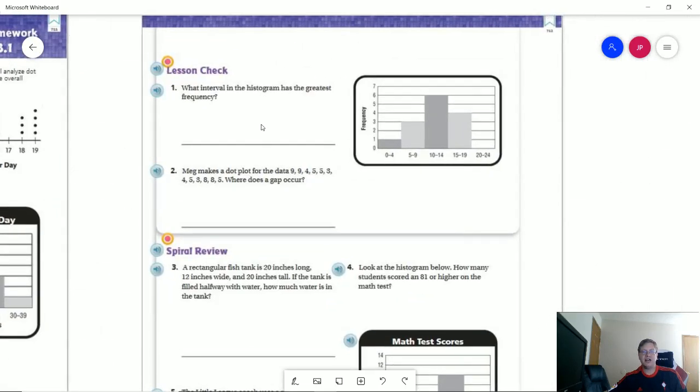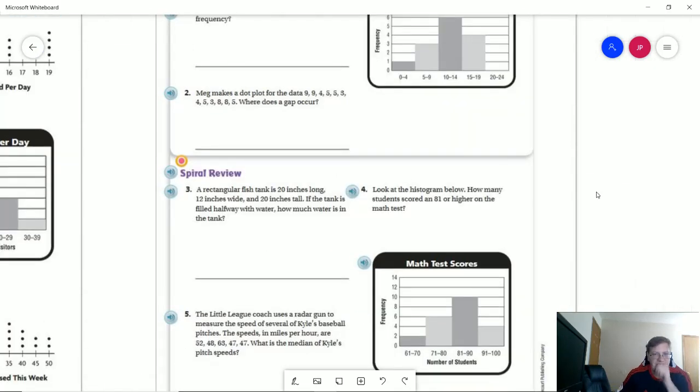Number one on the back, our interval that has the greatest frequency would be where our peak is for the histogram. And then we can actually answer this one by just looking at the numbers and comparing it. So if we said that we were missing certain numbers in here, it looks like we would go from five to eight. That would be an example of that. But if we are starting from zero, we could also say that we have another gap in there as well.